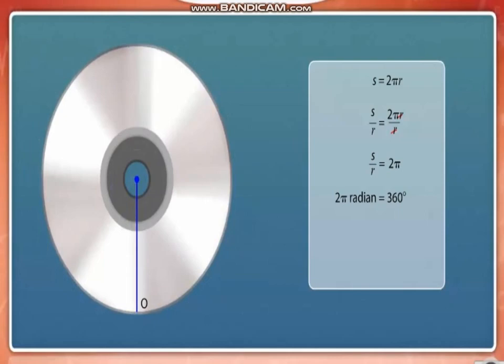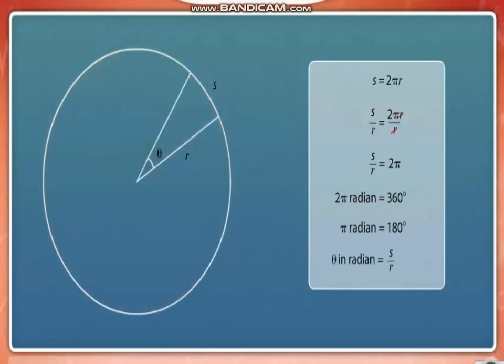Pi radian corresponds to an angle of 180 degrees. This new unit of angular measure is called the radian, which is defined as the arc length along a circle divided by the radius of the circle.